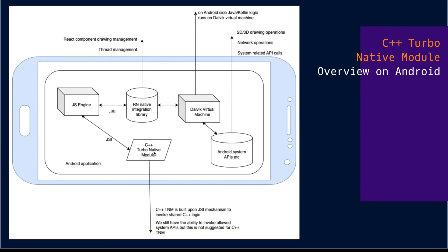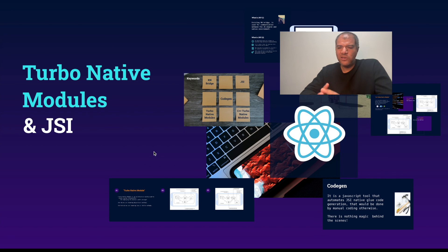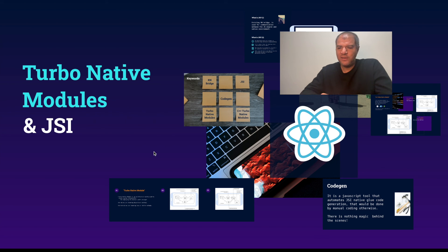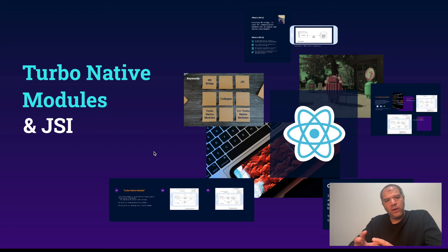TurboNative Modules and JavaScript Interface are really exciting new features — they unlock a lot of great abilities for us. Also, we are getting rid of the JSON string-based communication channel, and it is really exciting. I definitely suggest you to try and start using TurboNative Modules and JavaScript Interface in your project. In the upcoming video, I will be showing how to actually do the implementation using CodeGen and invoke something on the iOS and Android side using TurboNative Modules and C++ TurboNative Modules. Until the next video, have a good day.